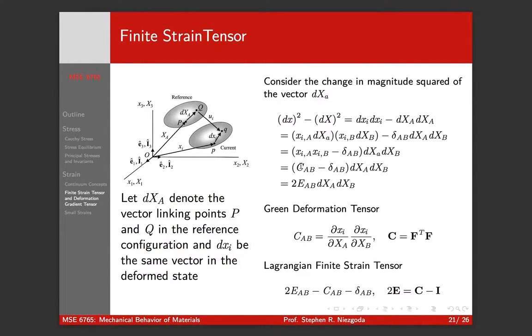So F is not a symmetric tensor, but if we take a non-symmetric tensor transpose times a non-symmetric tensor, this C is going to be a symmetric tensor. F transpose F has to be symmetric, and you can think of this as the square, for all practical purposes the square of the deformation gradient.